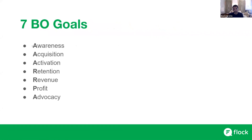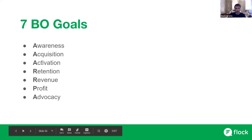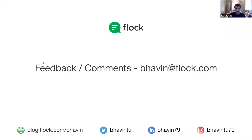The seven BO goals are: awareness, acquisition, activation, retention, revenue, profit, and advocacy. A simple way to think about an objective is: it is an intent to impact the highest priority BO goal. An intent to impact awareness, or revenue, or profit, or acquisition. Most of your business objectives will probably fit in this statement — it will be an intent to impact one of these seven goals, whichever is the highest priority for you and your team in this particular quarter. That finishes my tips and thought process and framework around writing a good business objective within the OKR framework.